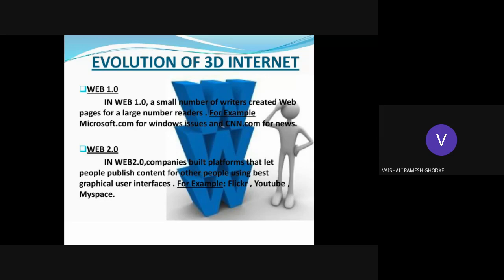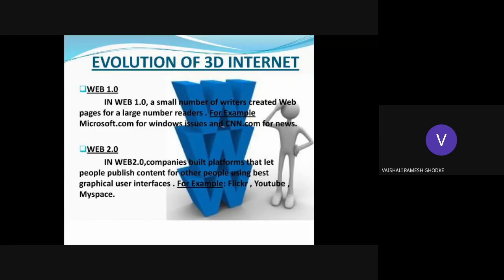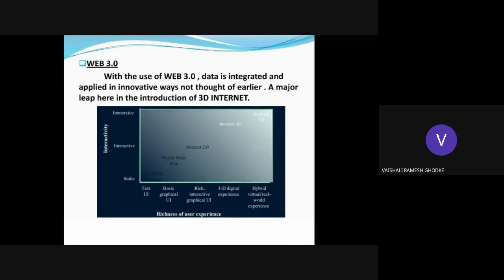In Web 1.0, a small number of writers created pages for a large number of readers — for example, microsoft.com for Windows issues and cnn.com for news. In Web 2.0, companies build platforms that let people publish content for other people using graphical user interfaces — for example, Twitter, YouTube, and MySpace.